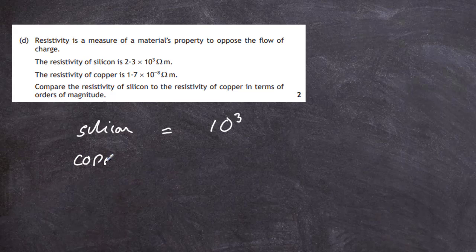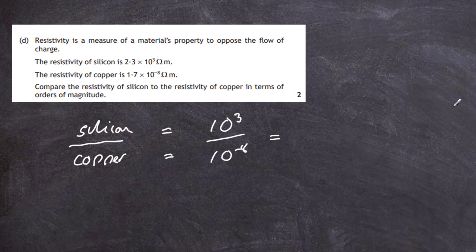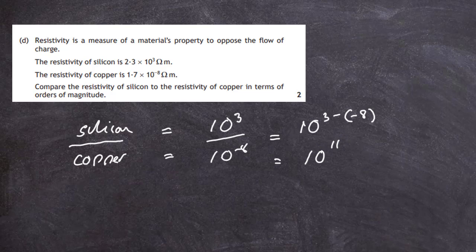Copper has an order of magnitude of 10⁻⁸ ohm meters. To compare them, we form a ratio: dividing powers of 10 means subtracting the exponents, so 10³ divided by 10⁻⁸ equals 10 to the power of 3 minus (−8), which is 10¹¹. Therefore, the resistivity of silicon is 10¹¹ times greater than that of copper — silicon's resistivity is 11 orders of magnitude greater. That completes the order of magnitude comparison for two marks.